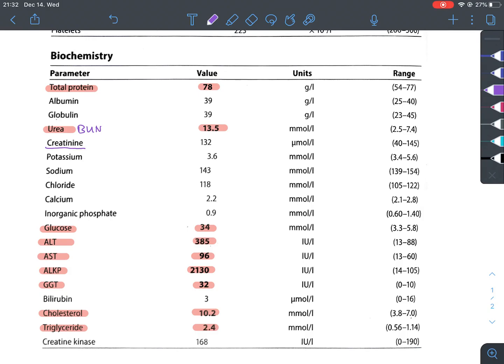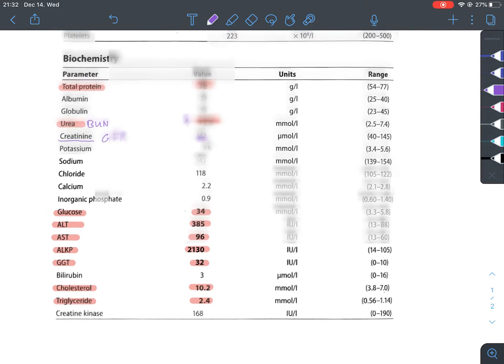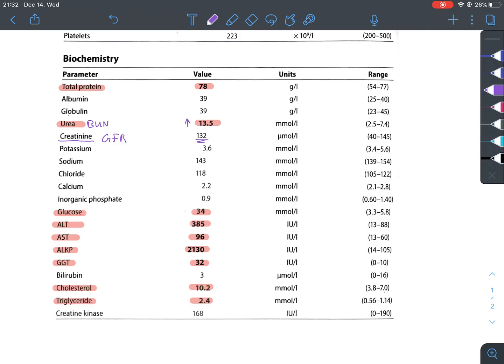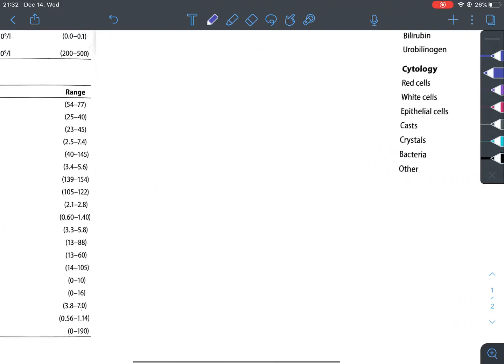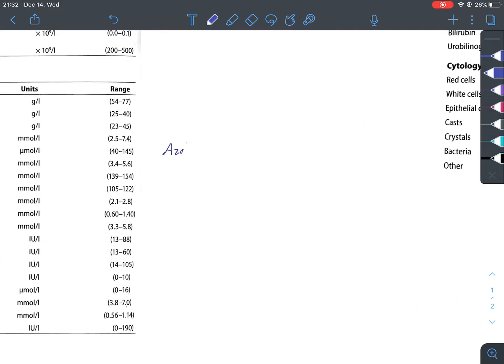On the other hand, creatinine is a direct measure of the glomerular filtration rate. So if creatinine is very high, then the glomerular filtration rate is very low, indicating that we really have a problem with the kidney. In this case, we have an elevated blood urea nitrogen, but a totally normal creatinine, which is going to make us understand that this is a case of pre-renal azotemia.